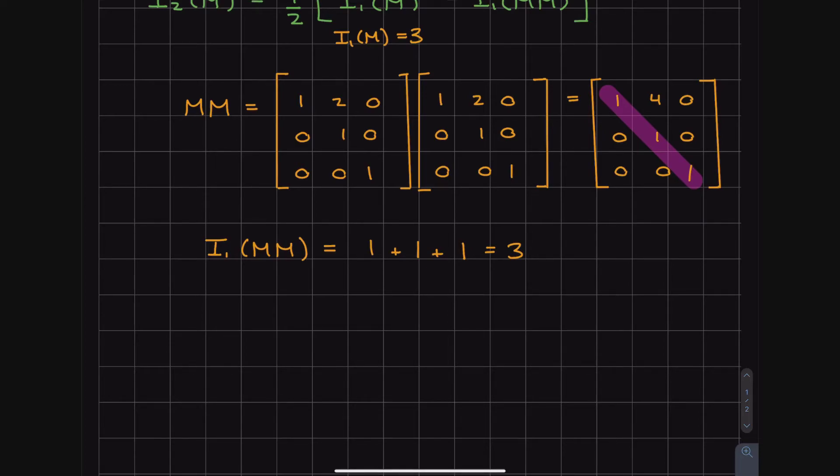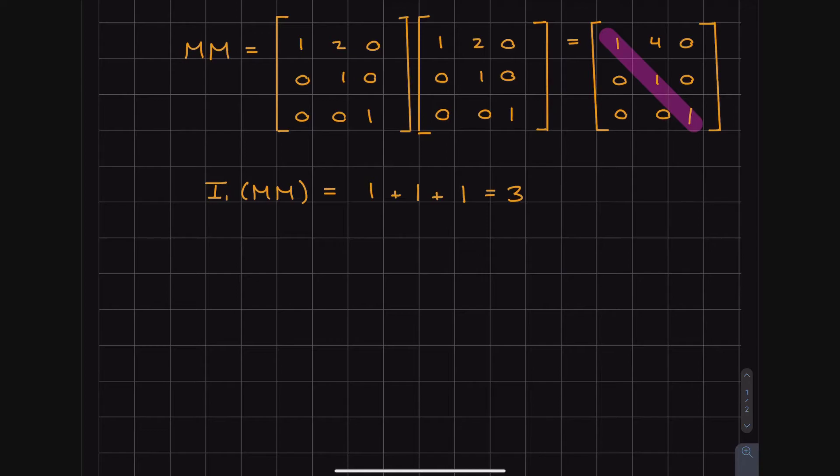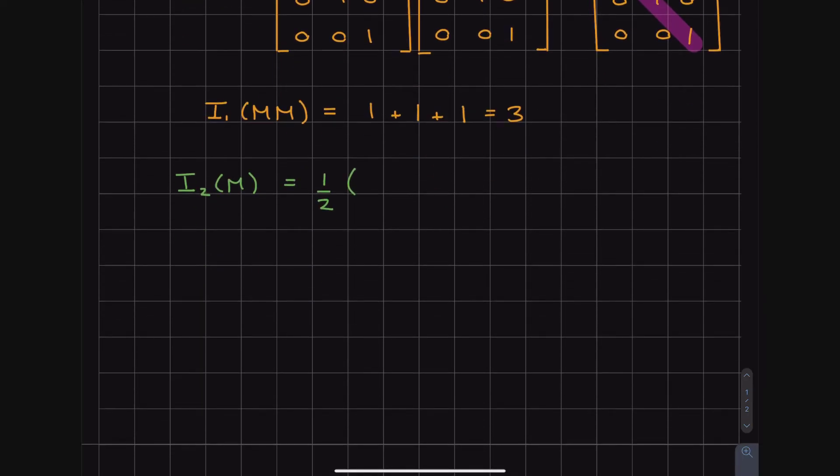So I come down here, and if I want to find invariant 2 of M, I just have to substitute everything into the formula. So I2 of M is going to be equal to 1 half. So that's just a number. Don't be scared of the 1 half. And then we're going to have I1 of M squared. So we're going to have 3 squared minus I1 of MM, which we know is just 3.